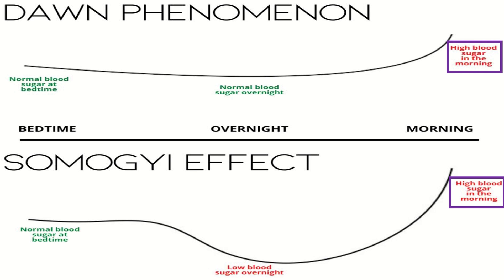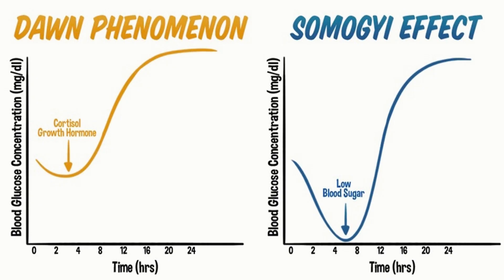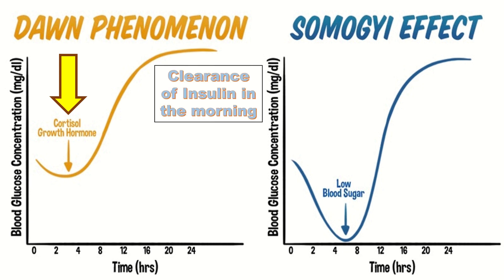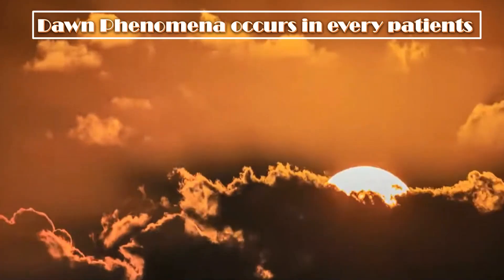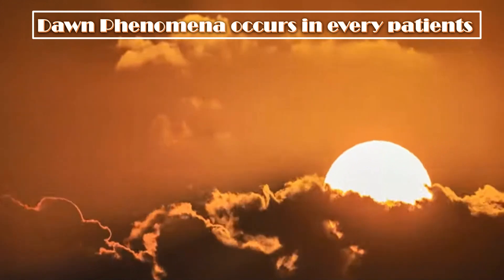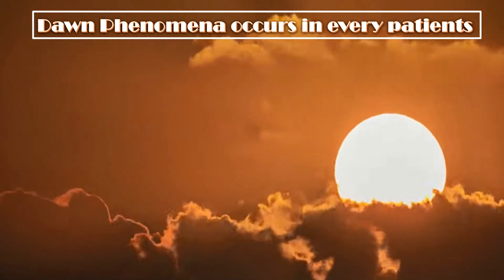But there is no midnight hypoglycemia in the case of dawn phenomena. The reason for dawn phenomena is a nocturnal surge of cortisol or growth hormone release, causing increased clearance of insulin in the morning. In contrast, in Somogyi effect there is midnight hypoglycemia.